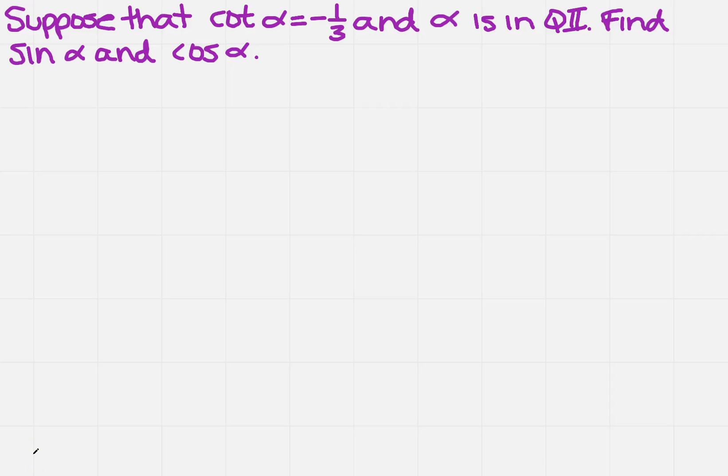Suppose that the cotangent of alpha equals negative 1/3, and alpha is in quadrant 2. We want to find the sine of alpha and the cosine of alpha. Now, quadrant 2 — why is that important?